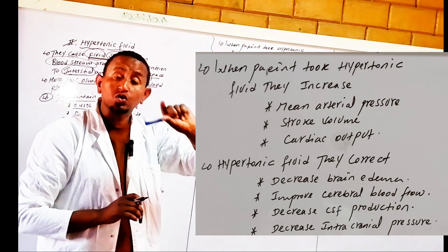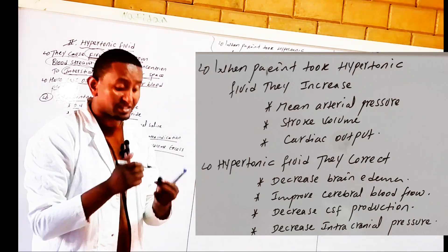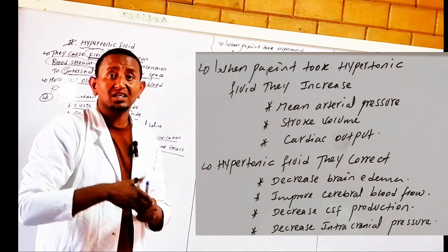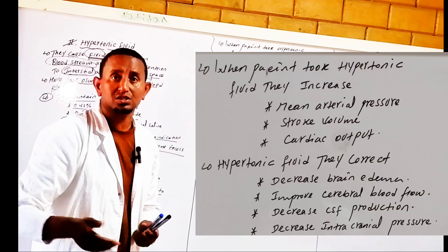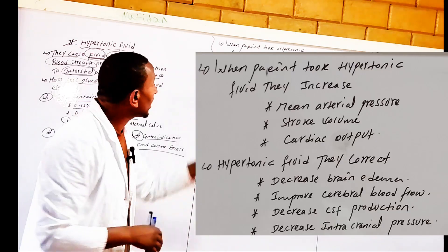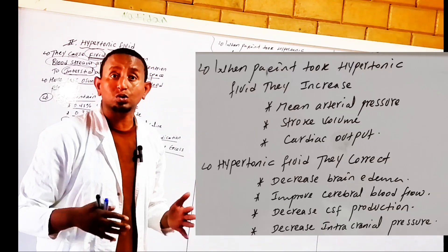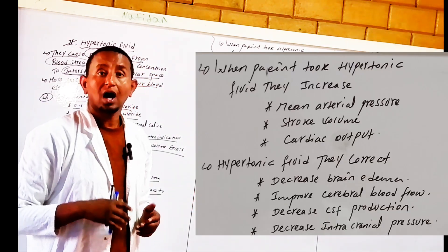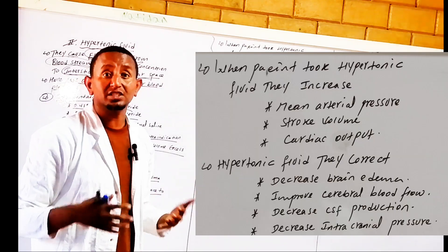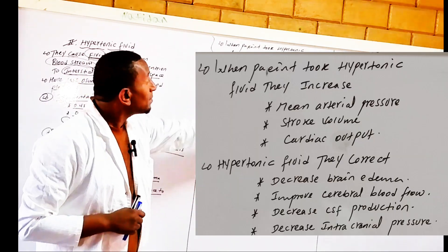Stroke volume is the amount of blood ejected by the heart within one beat. Cardiac output is the amount of blood ejected by the heart within one minute.